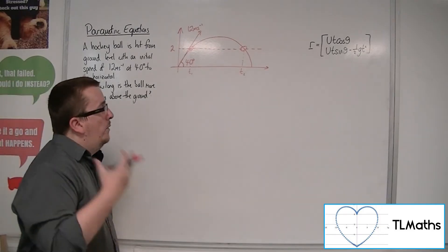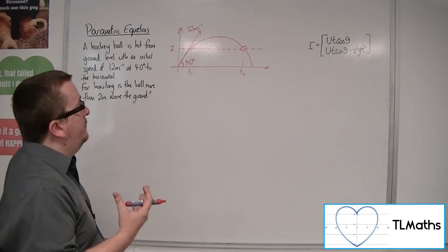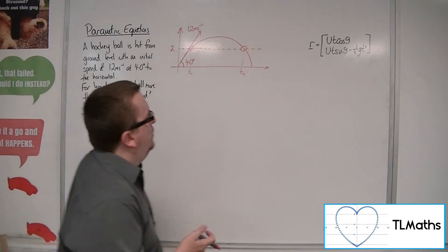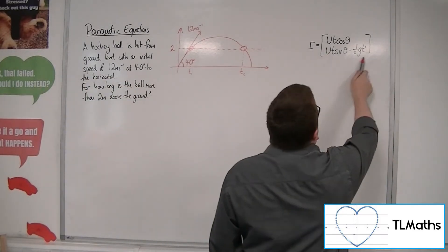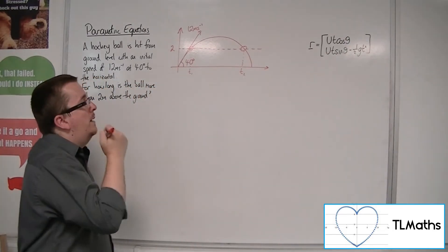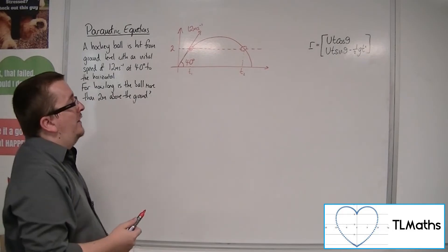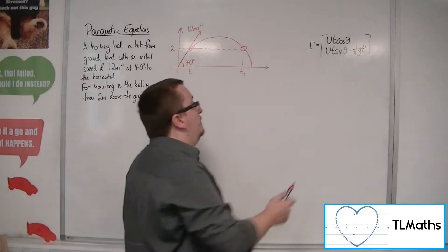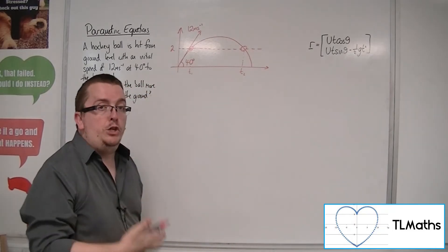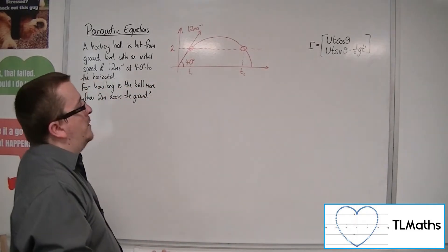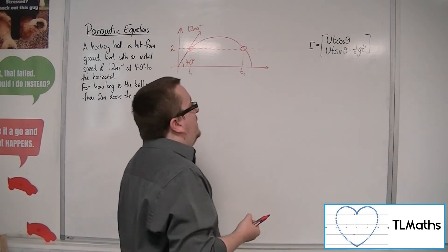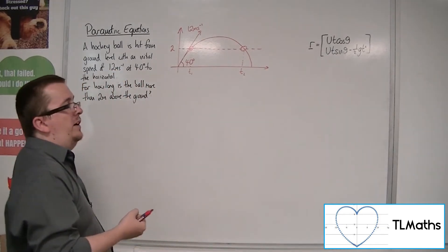So what we're doing then is we're trying to find when the y component is equal to 2. So this is the component form of the position of the particle as it moves. So these are ones that really are useful to remember. So x is equal to ut cos theta, y is equal to ut sine theta minus a half gt squared.